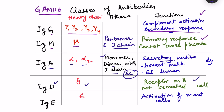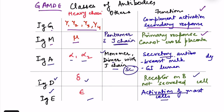IgD has a delta heavy chain and functions as a receptor on B cells. IgE has an epsilon heavy chain and is important for mast cell activation — the antigen binding site attaches to the antigen while the Fc portion attaches to mast cells, causing them to release histamine. IgE is important in allergic responses.